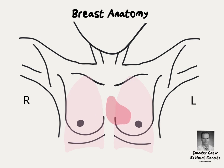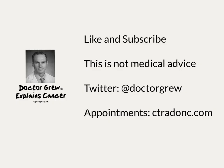Just deep to the chest wall are the lungs — one on each side. The heart lies between the lungs but extends mostly to the left side of the chest. The location of the heart can be a factor in planning radiation therapy for women with left-sided breast cancer.